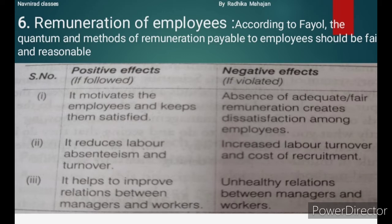Principle 6: Remuneration of Employees. According to Fayol, the quantum and methods of remuneration payable to employees should be fair and reasonable. It should be satisfactory to both employers and employees, give them a reasonable standard of living, and should be within the paying capacity of the company. If followed: it motivates employees and keeps them satisfied, reduces labor absenteeism and turnover, and helps improve relations between managers and workers.